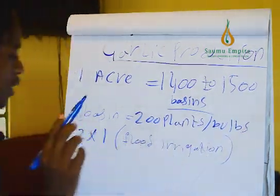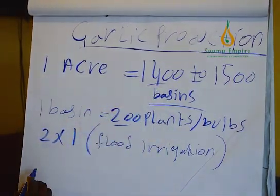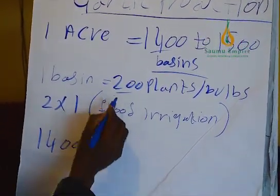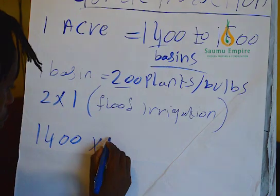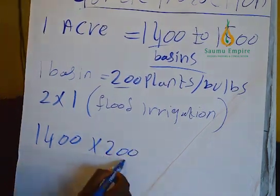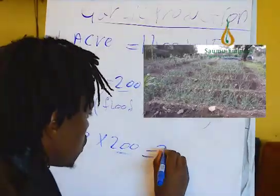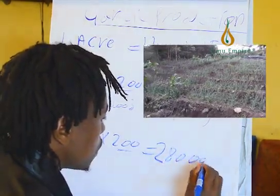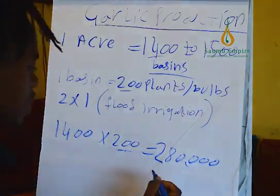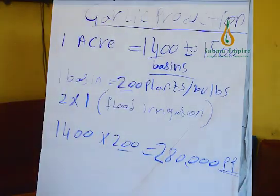In flood irrigation, the plant population per acre: take 1400 basins times 200 plants per basin, and we get 280,000 plants — that is the plant population per acre.